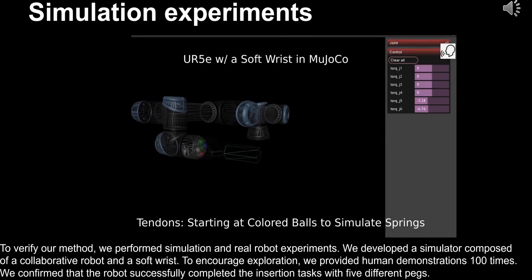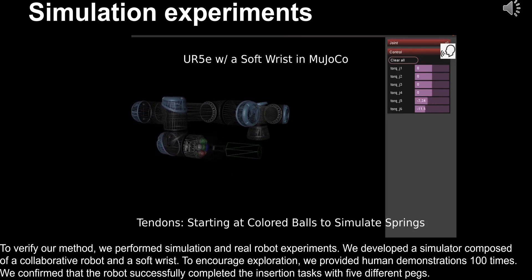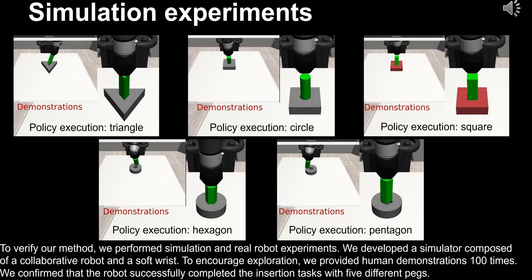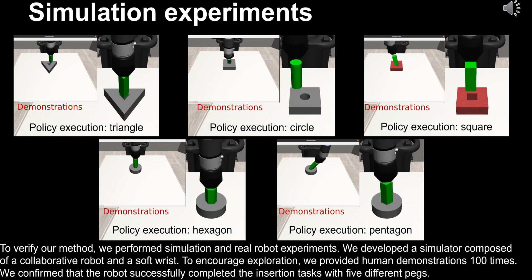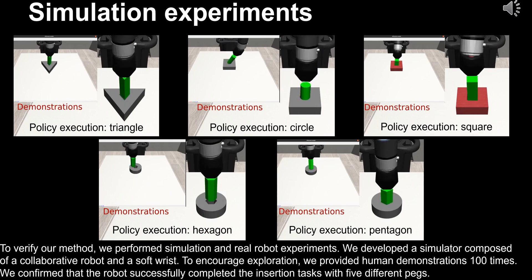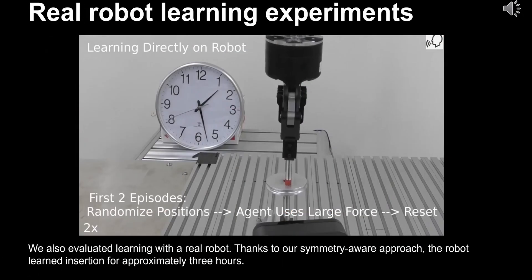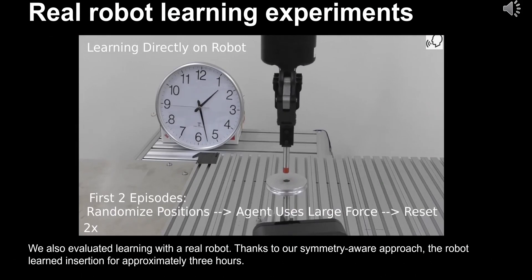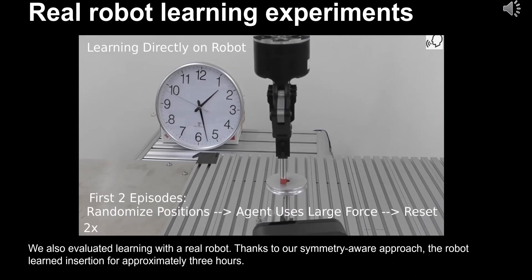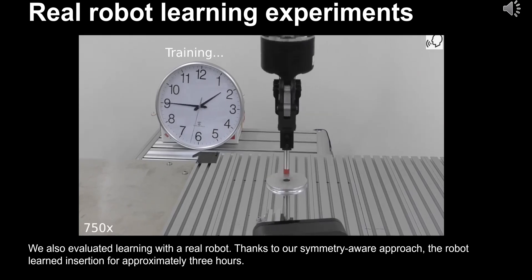To verify our method, we performed simulation and real robot experiments. We developed a simulator composed of a collaborative robot and a soft wrist. To encourage exploration, we provided human demonstrations 100 times. We confirmed that the robot successfully completed the insertion tasks with five different pegs. We also evaluated learning with a real robot. Thanks to our symmetry-aware approach, the robot learned insertion in approximately three hours.